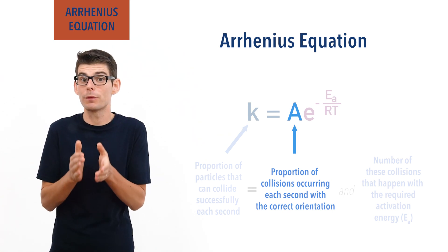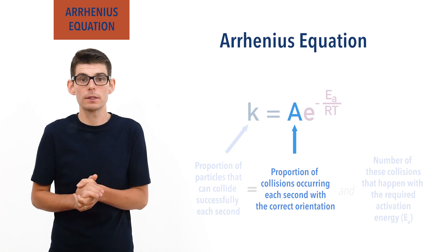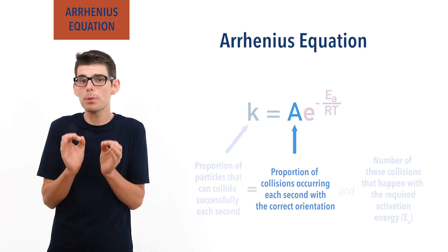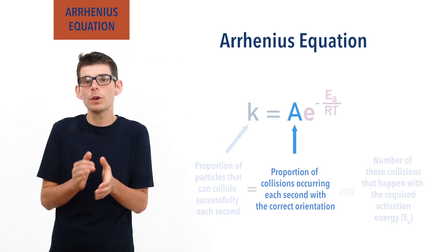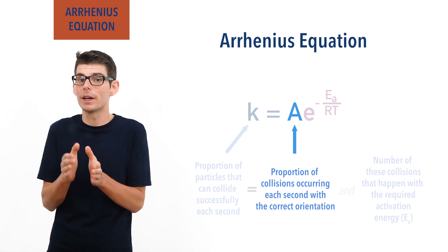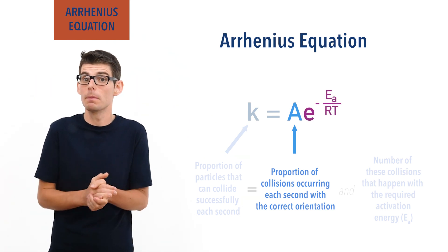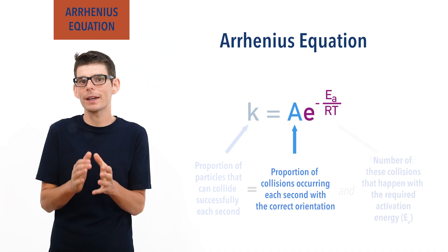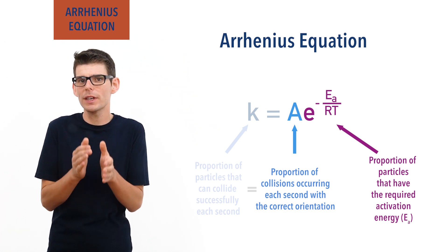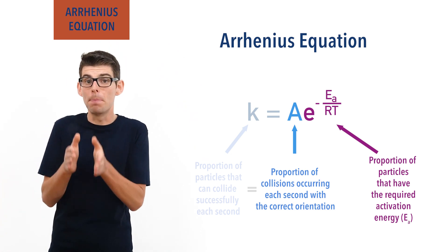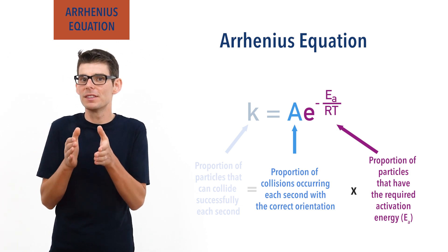If all these collisions happened with the required activation energy, then the rate of reaction would effectively be A multiplied by the concentration of reactants. However, we know that only a small proportion of collisions have the required activation energy. Even if two particles collide with the correct orientation, they still won't react unless they have the required activation energy. This is where the second part of the Arrhenius equation comes in: e to the power minus Ea over RT tells us the fraction of reactant particles that have at least the required activation energy. Therefore, if we multiply the proportion of correctly oriented collisions per second by the proportion of particles with the required activation energy, we get the proportion of successful collisions that can occur per second.